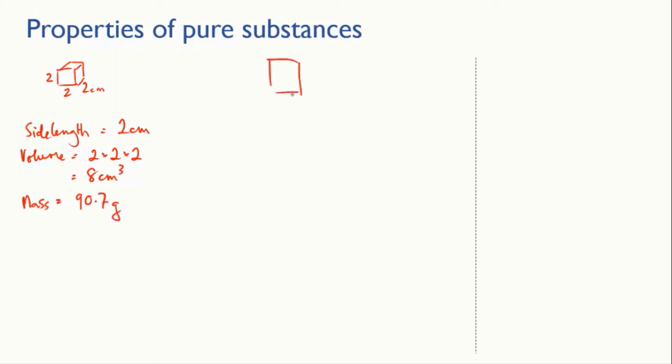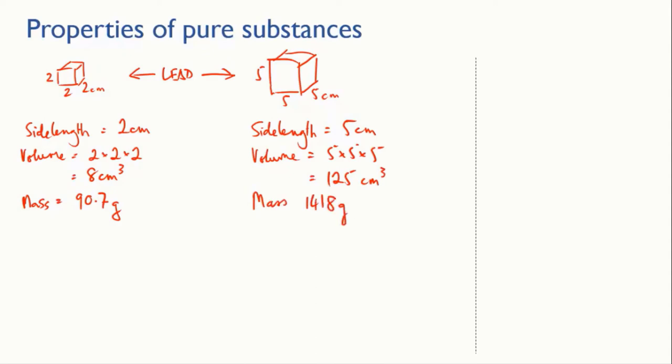Now imagine another block of lead. So they're both lead. But this one has dimensions of five by five by five centimeters. That means its volume is five times five times five, which equals 125 cubic centimeters. And imagine that we weigh this block and we find that its mass is 1,418 grams. That's 1.418 kilos.